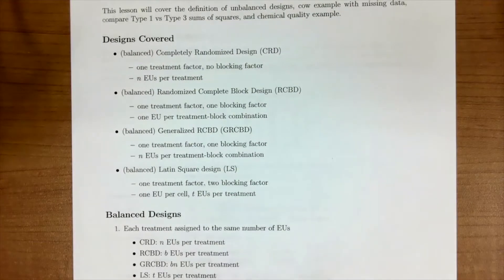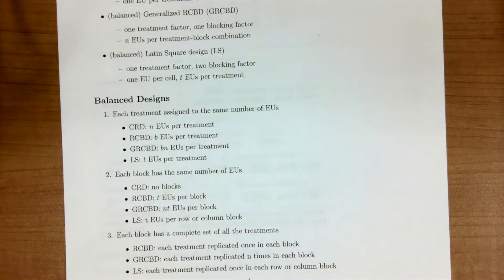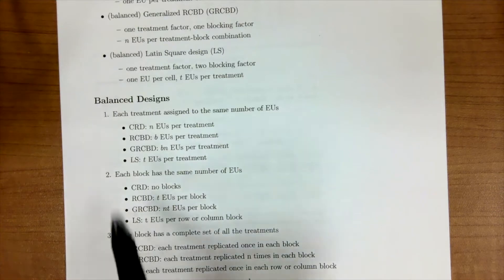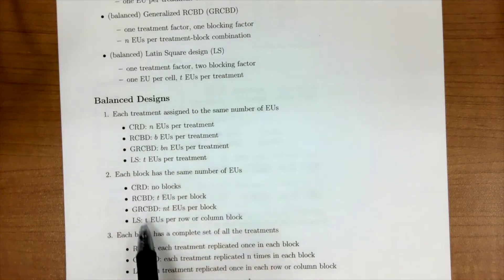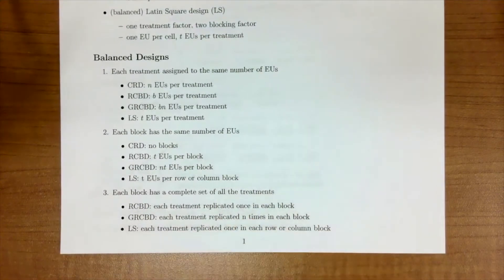So thus far we've covered only balanced designs. A balanced design is one where each treatment is assigned to the same number of experimental units, each block has the same number of EUs, and each block has a complete set of all treatments. These three points are what are needed for a balanced design.